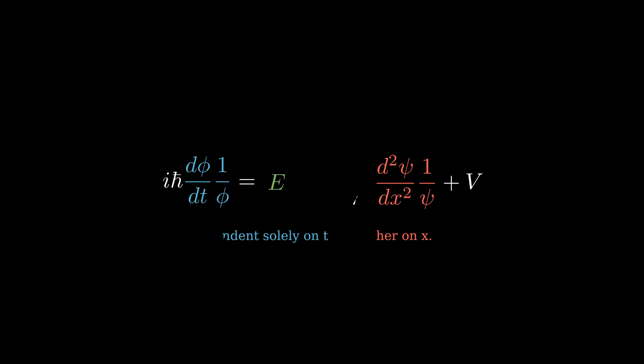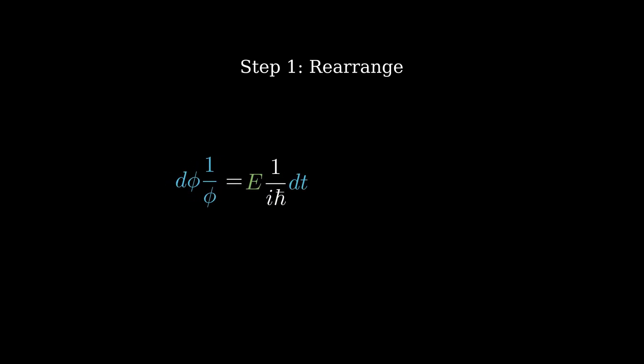Now, let's solve the time dependent differential equation. The first step is to rearrange. In this case, we get the infinitesimal increment of time on the right hand side, and likewise the increment of φ on the left hand side.